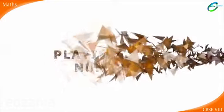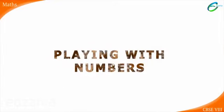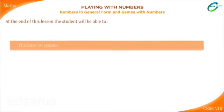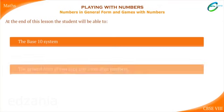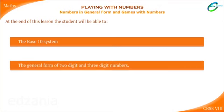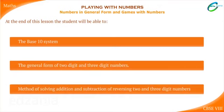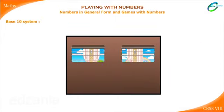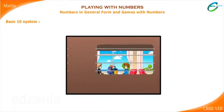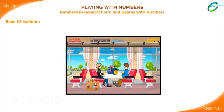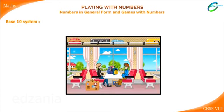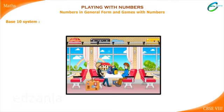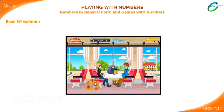Playing with numbers. Manoj is a brilliant boy who knew some tricks with numbers. While travelling to school on the train, he met his friend Raj and decided to use his tricks on Raj. Let us see and listen carefully to their conversation.